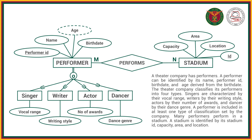A theater company has performers. A performer — that is an entity — can be identified by its name, performer ID which will be our primary key, age, and birth date. Age is a derived attribute because we can compute it from the birth date.